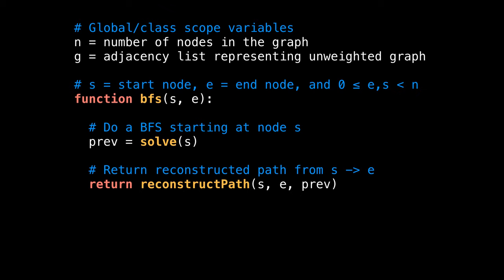Let's look at some pseudocode for the breadth first search. First things first, we'll need two variables: n, the number of nodes in our graph, and g, the adjacency list representing our unweighted graph. This breadth first search function takes two arguments, s and e, the start and end node indices of the search. The return value for this function is the shortest path of nodes from s to e.